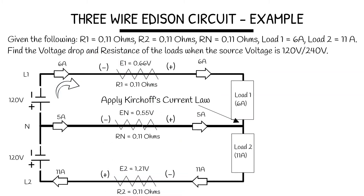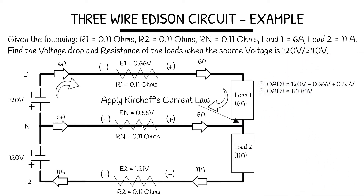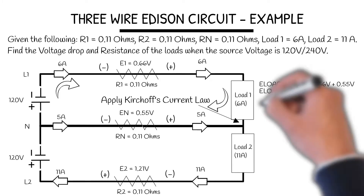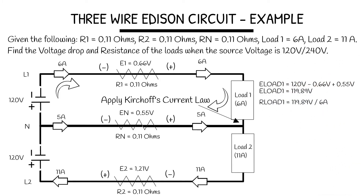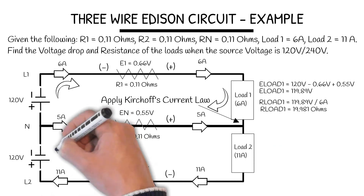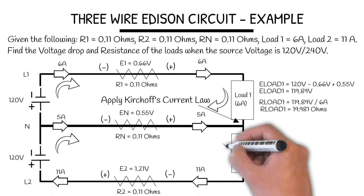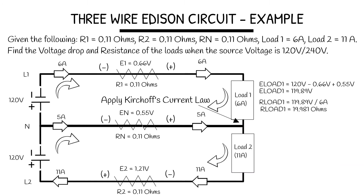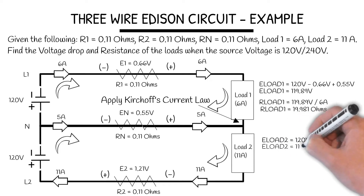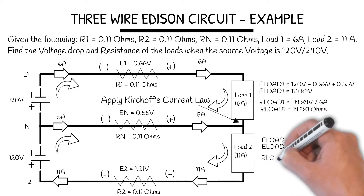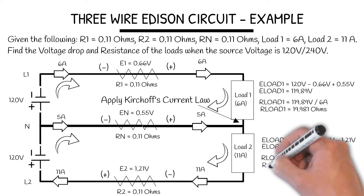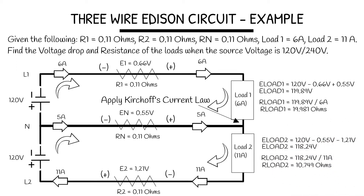To find the volt drop on load one, we must evaluate the individual loops. Taking 120 volts minus 0.66 plus 0.55, therefore load one volt drop is 119.89 volts and the resistance is 19.981 ohms. For the second volt drop, looking at the bottom loop, we have 120 volts minus 0.55 minus 1.21, which gives 118.24 volts, and load two resistance is 10.749 ohms.